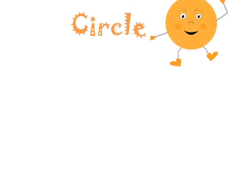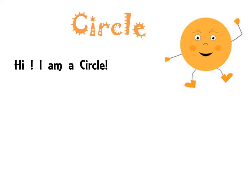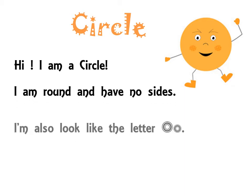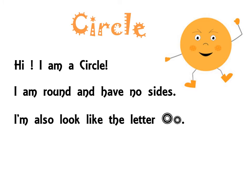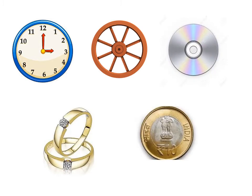Circle. Hi, I am a circle. I am round and have no sides. I also look like the letter O. Let us see few objects that have a 2D shape of a circle. All these objects are in the shape of a circle.